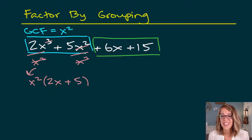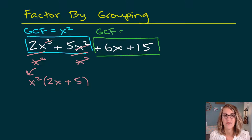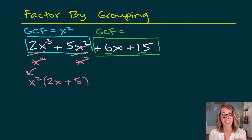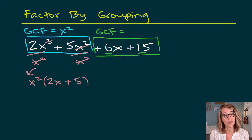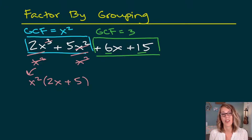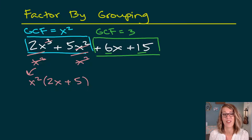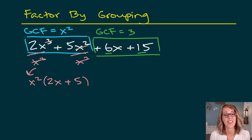Next, let's look for the GCF in the second pair. Looking at the coefficients first: what goes into both 6 and 15? They're not both even, but 3 goes into both. Then looking at the variable — there's an x in the first term but not in the second, so they don't share a variable.